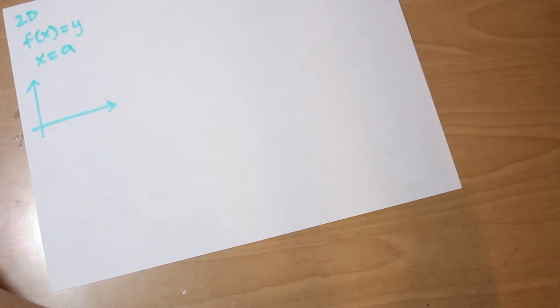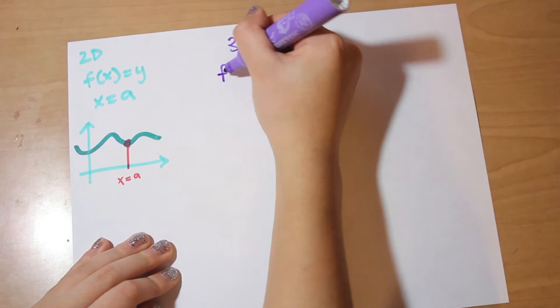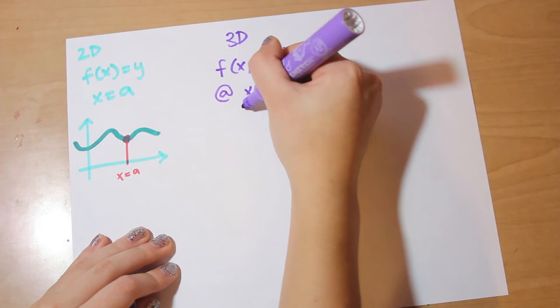Earlier with the 2D tangents, we were looking at a function f respective to x, or f(x). And now we're looking at 3D. A function depends on three variables: x, y, and z. So instead of being given f(x) and a point where x equals a, we have a surface function f(x, y, z) and a point (a, b, c).